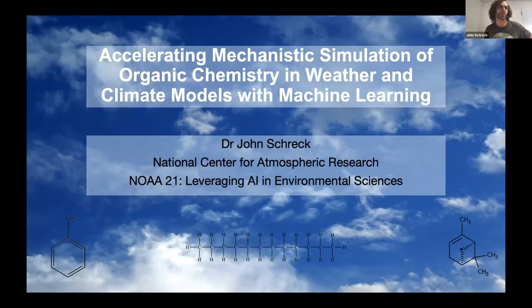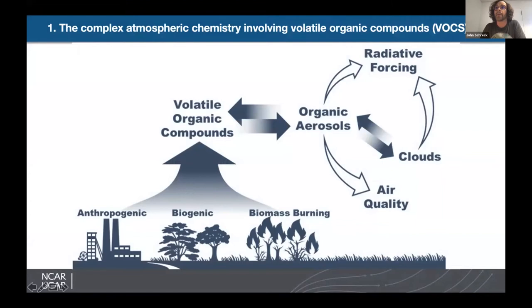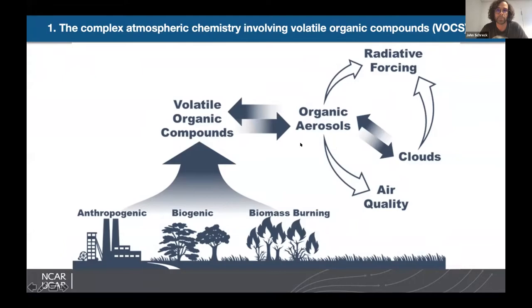My name is John Schreck. I'm a machine learning scientist at the National Center for Atmospheric Research in Boulder, Colorado. Today my talk is about accelerating mechanistic simulation of organic chemistry in weather and climate models with machine learning. We are interested in the chemistry involving volatile organic compounds, or VOCs. This drawing illustrates the chemical life cycle of VOCs coming from anthropogenic, biogenic, and biomass burning sources. As these VOCs oxidize, they can form secondary organic aerosols or other intermediate compounds, leading to smog and other types of air pollution.